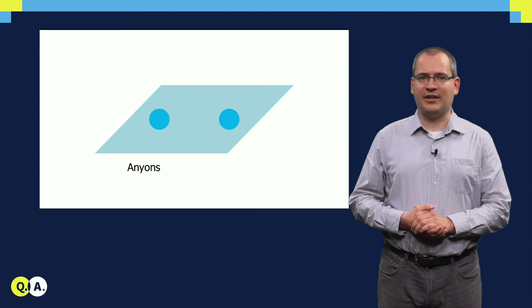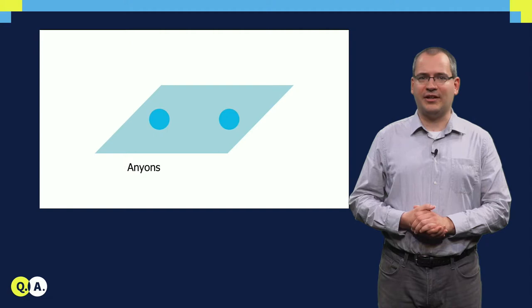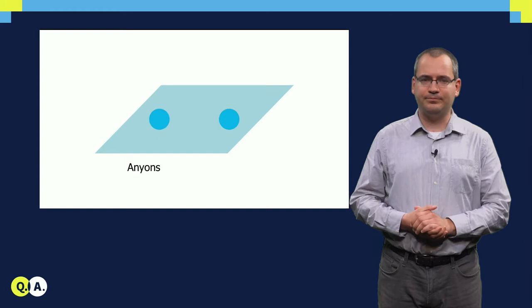In two dimensions, the alpha phase can be anything, and we have a different set of particles for every alpha. These particles are called anyons.